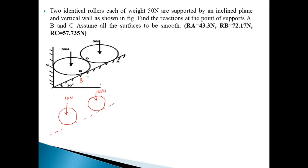Remember that the self-weight is always acting towards the centre of the body. That's why we consider the direction for the self-weight as always vertically downward. Next, if there is an external force we have to apply it, but in this case there is no external force acting on any roller, so there are zero external forces acting on the rollers.